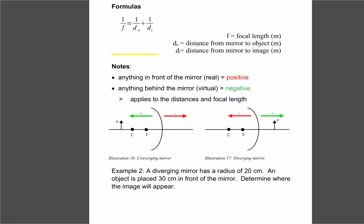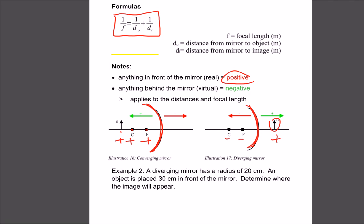There are a couple of formulas we can use. The first uses the focus and distances: anything in front of the mirror is a positive distance; anything behind the mirror is a negative distance. The same applies to the focus point. For a concave (converging) mirror, F and the object distance are all positive. For a diverging mirror, the object in front is positive, but the center and focus point are negative because they're on the back side. Make sure you get your pluses and minuses in the right spots.